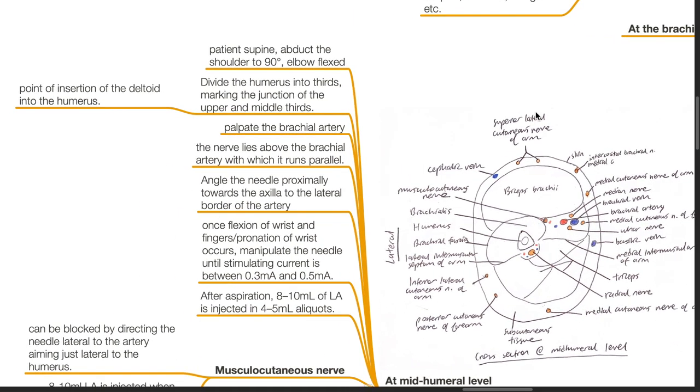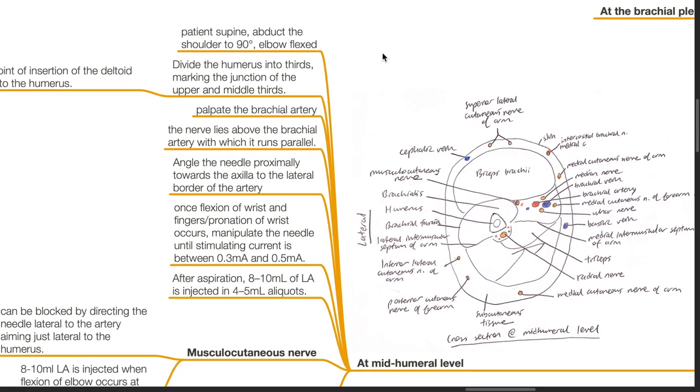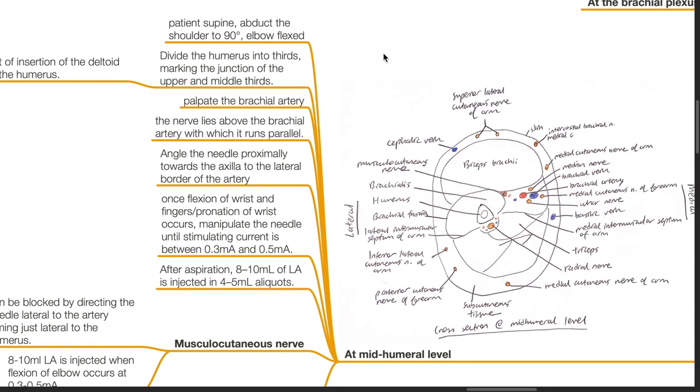Position the patient supine. Abduct the shoulder to 90 degrees with the elbow flexed. Divide the humerus into thirds marking the junction of the upper and middle thirds which is the point of insertion of the deltoid into the humerus. Palpate the brachial artery.